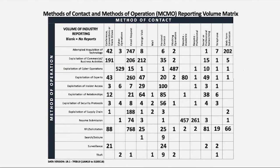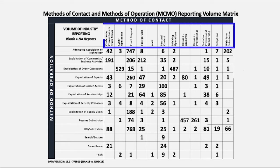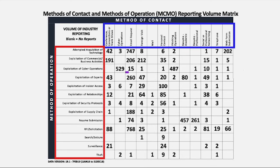At a glance, here's how to read the method of contact and method of operations matrix — there will be a more in-depth description later in the presentation. Highlighted by the blue box are the methods of contact. Highlighted by the red box are the methods of operation. Highlighted by the purple box are the intersections of methods of operation and contact, representing the volume of suspicious contact reporting in that time frame.